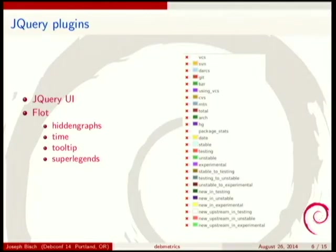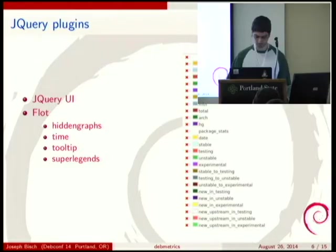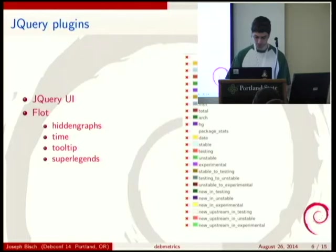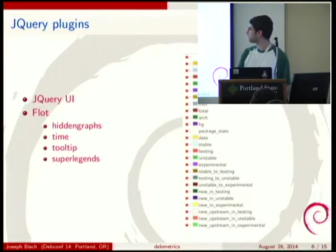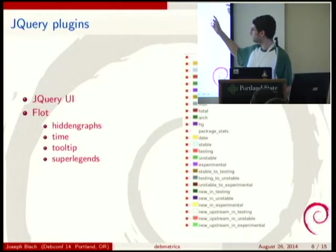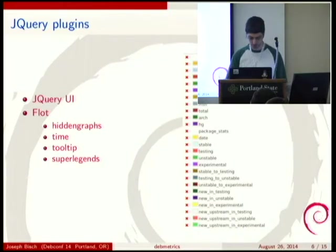The tooltip plugin displays data related to a point when the user mouses over it on the graph. SuperLegends is a plugin I wrote that allows multiple metrics to be added to the graph while placing a heading for each metric in the legend. You can see in the picture the red X's that let you delete metrics and the labels listing metric names added by that plugin.